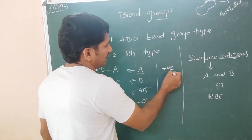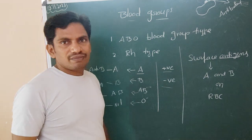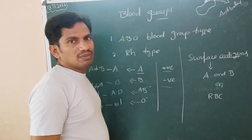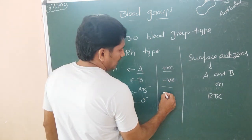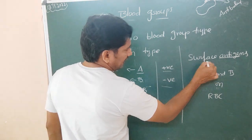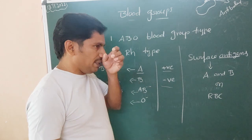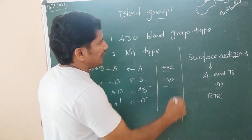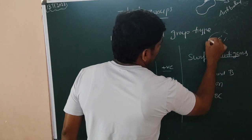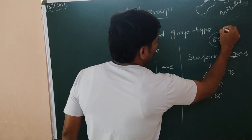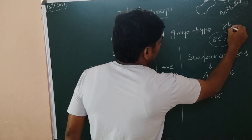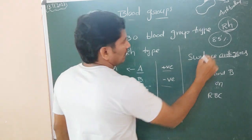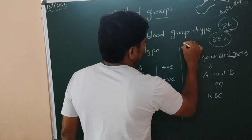Now, how do we differentiate positive and negative? Later on, another scientist found that along with antigen A and B, there is one more antigen on the surface of 85% of people. They possess this additional antigen. That is the RH factor, which was found in the rhesus monkey.